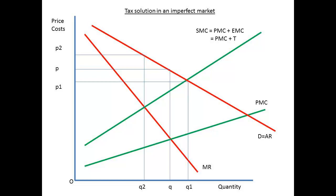Remember that a monopoly is a firm operating under conditions of imperfect competition. Here we have shown the demand curve and the marginal revenue curves. The private marginal costs, PMC, are shown as a supply curve before taxation, and the social marginal costs, SMC, after taxation.